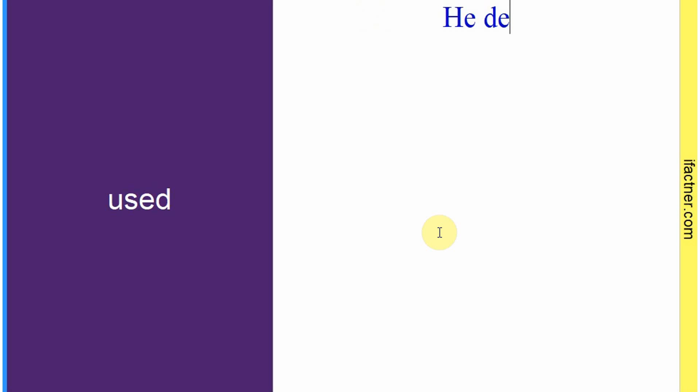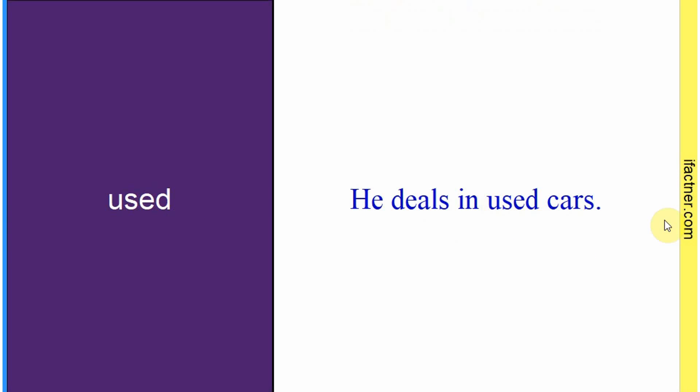Word hai: 'used'. Sentence banaate hain meaning samajhne ke liye: 'He deals in used cars.' Woh purani gaadi ka — used cars ka — karobaar karta hai. Toh 'used' ka matlab hota hai jo cheez istamal ho chuki ho. Yeh 'use' ki past mein second form bhi hai. Sentence banaaya: 'He deals in used cars.'